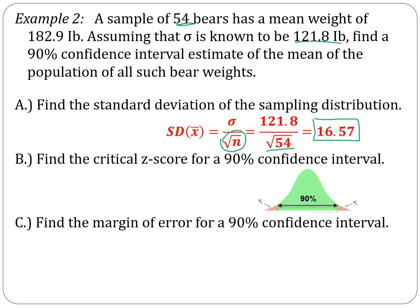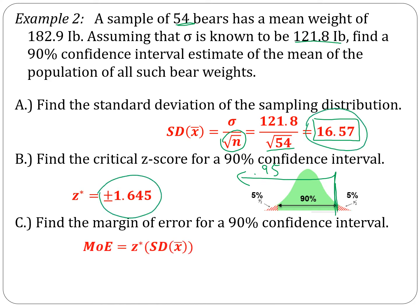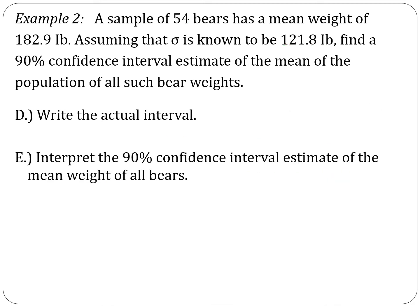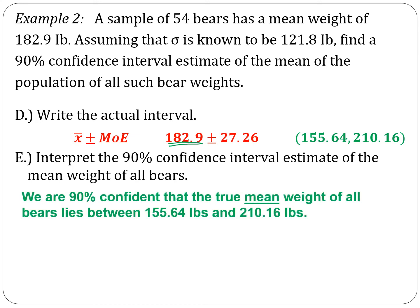Critical Z-score for 90%: 90% cut out of the middle, 5% in both tails. Look up 95% in the Z-table and we get 1.645. Margin of error is this Z-score times the standard deviation, and we get 27.26. The interval is the point estimate from our sample plus and minus that margin of error: 155.64 to 210.16. We are 90% confident that the true mean weight of all bears lies between 155.64 and 210.16 pounds.